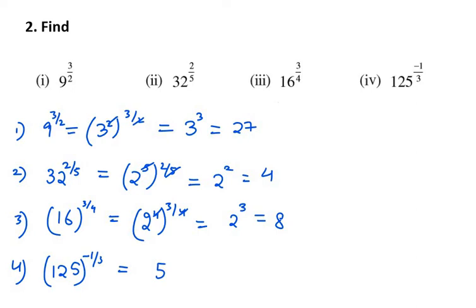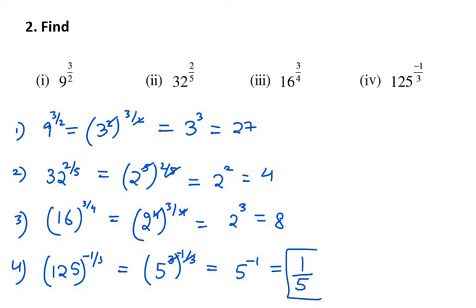The fourth part is 125 raised to power minus 1 over 3. We write 125 as 5 raised to power 3, giving us 5 raised to the power minus 1 over 3. The 3s cancel, leaving 5 raised to minus 1, which equals 1 over 5.